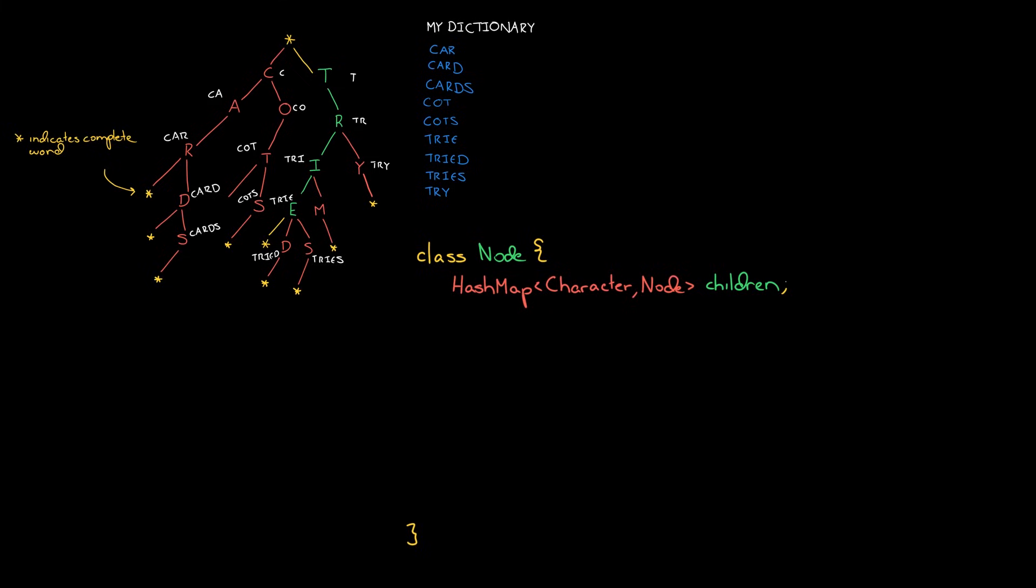Additionally, we need to understand not just do you have an R as a child, an R node as a child, but is that actually a complete word, or is it just a prefix? So in addition to each node having a mapping from character to node, each node also has some sort of flag called something like is_complete_word that represents whether that's a complete word or not.